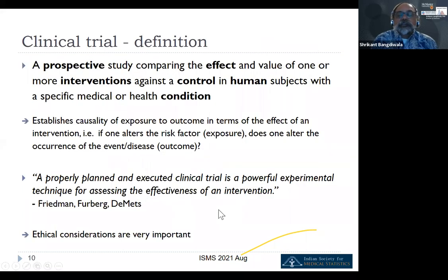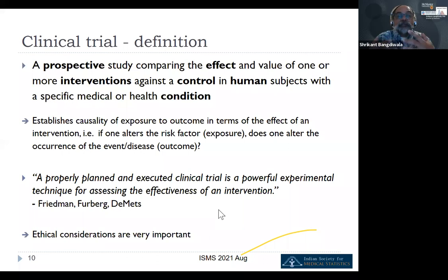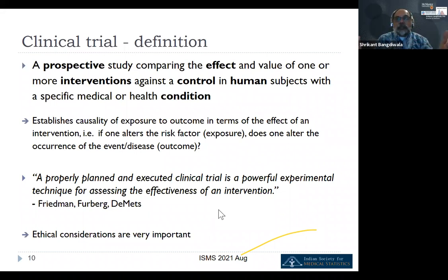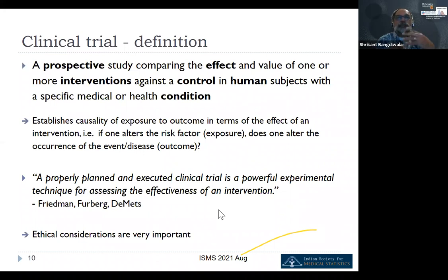So what is a clinical trial? The key words in the definition are: first, it's a prospective study — never done retrospectively. It compares the effect and value of one or more interventions against a control. There is always a control group. It is conducted in human subjects with a specific medical or health condition — the term 'clinical trial' refers to experimentation in humans specifically. It establishes the causal relationship of exposure on an outcome: if you alter the risk factor, do you alter the occurrence of the event?